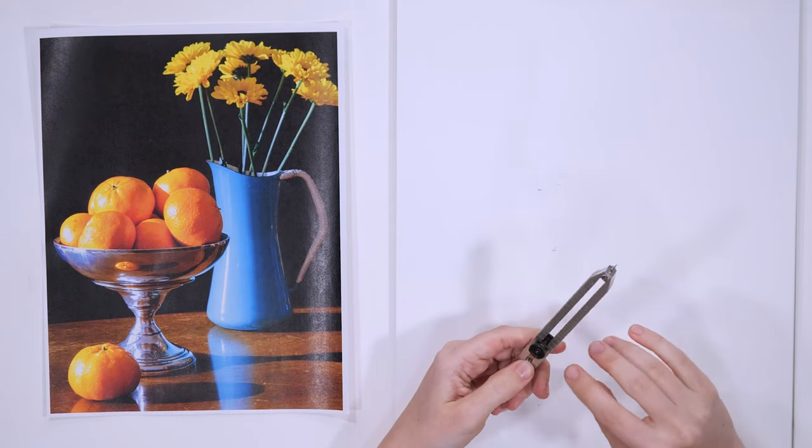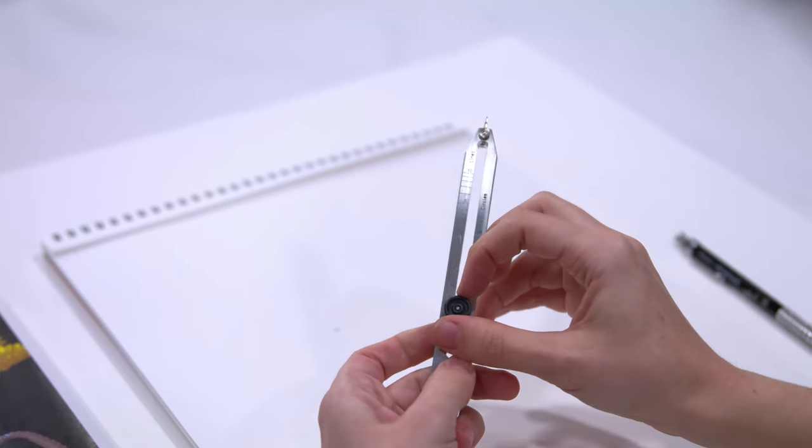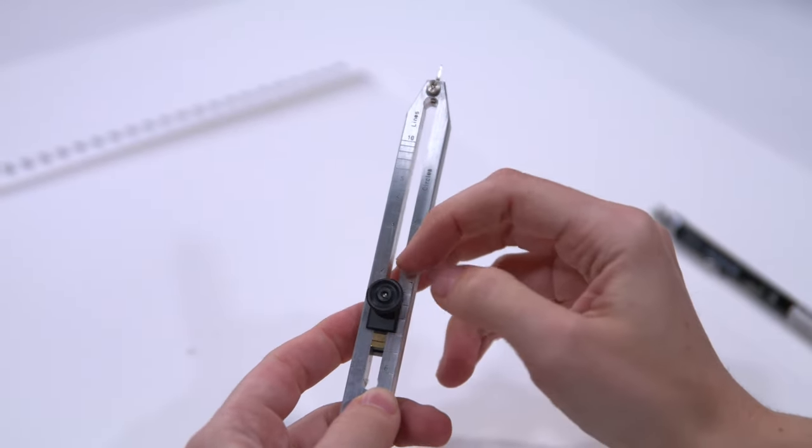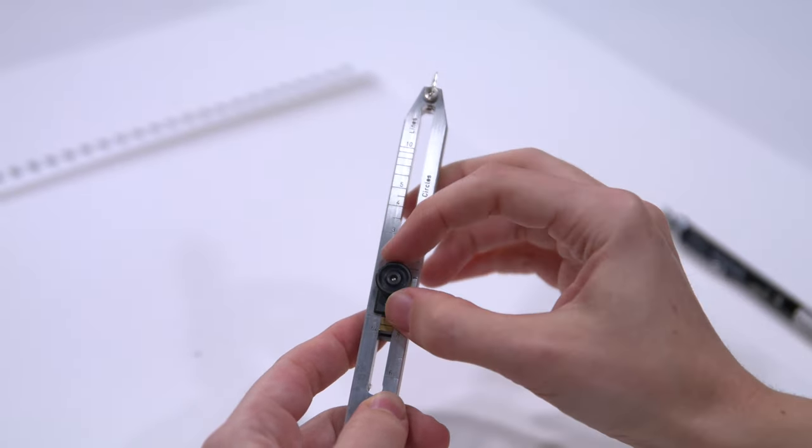If you want to use any of the other notches that are on here, it's easy. Just come back to this resting point, open up your knob again, and slide it up to whatever proportion that you might want.